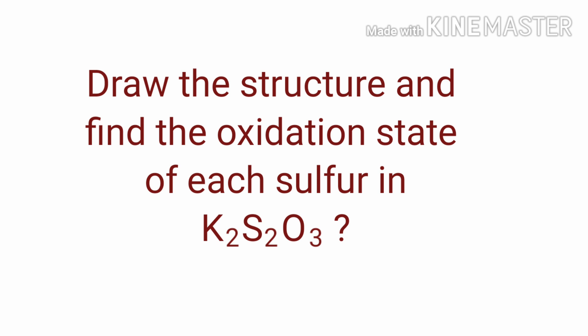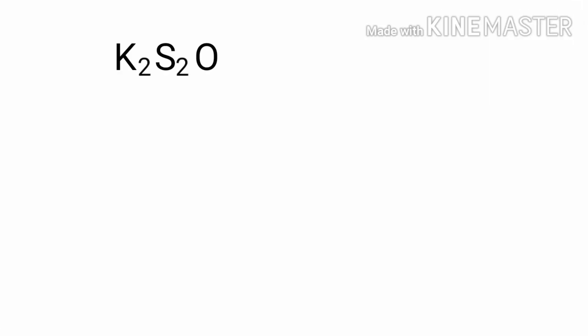Draw the structure and find the oxidation state of each sulphur in potassium thiosulphate. Potassium thiosulphate is a neutral compound with overall oxidation number zero. Therefore we know that the sum of the oxidation numbers of the atoms is equal to zero.